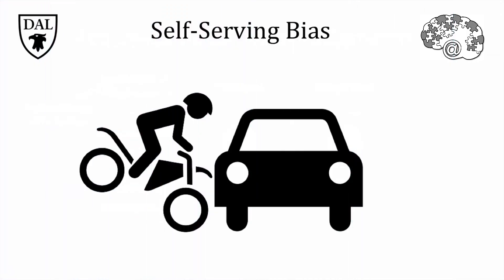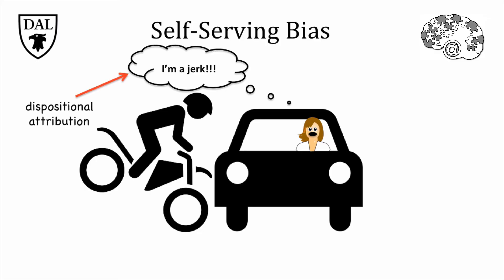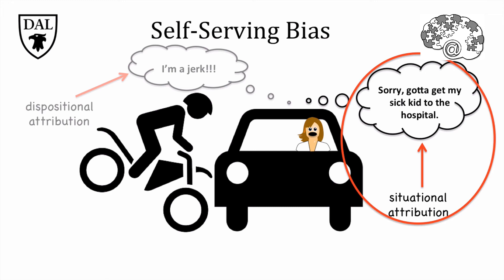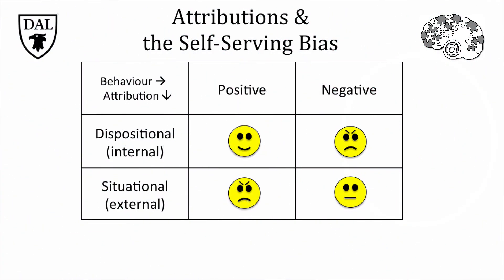So when do we use dispositional and situational attributions? When it comes to our own behavior, we usually explain it in a way that makes us look good and feel better about ourselves. What if you were the person driving like a jerk? Are you likely to use a dispositional attribution and admit you are being a jerk? Or rather, are you more likely to use a situational attribution and blame it on your circumstances? It turns out that most of the time, we use the self-serving bias when it comes to our own behavior. So returning to the table, we're more likely to use dispositional attributions when explaining our own positive behavior — 'I donated to a charity because I'm a nice person' — but situational attributions for our own negative behavior: 'I cut that cyclist off because I had an unusual situation.'